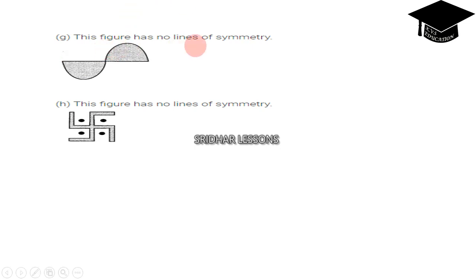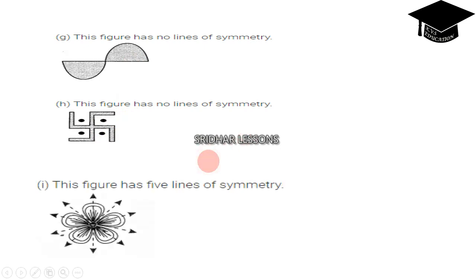Figure G has no lines of symmetry. Observe carefully. And this picture also has no lines of symmetry. This figure has five lines of symmetry — observe the lines: L1, L2, L3, L4, and L5. This figure has five lines of symmetry.